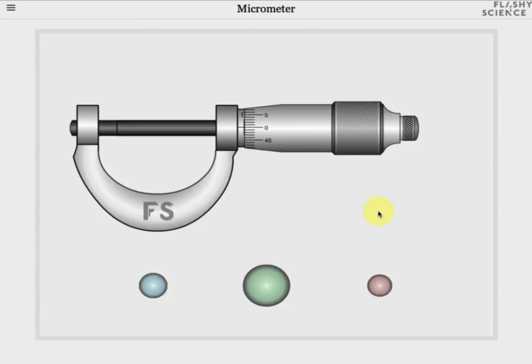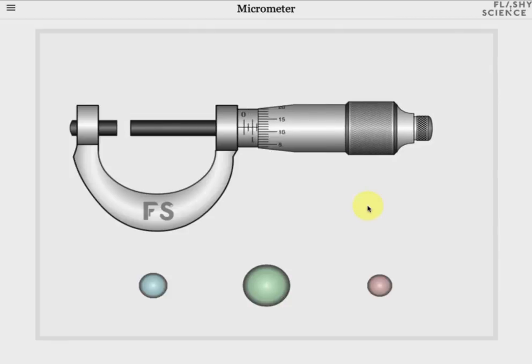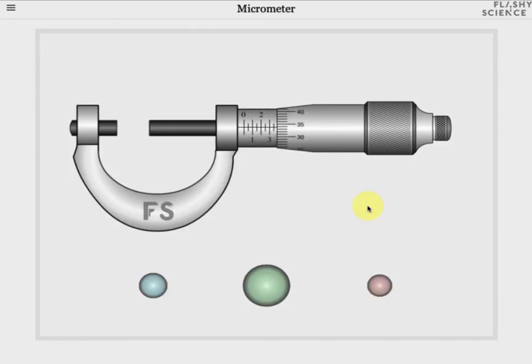To operate the experiment, first click and drag the thumbscrew region down to open the micrometer until the space created is wider than the sample you wish to measure. Then click and drag the sample.